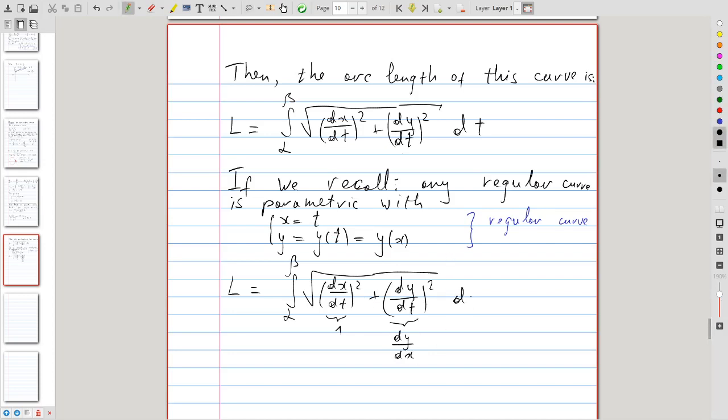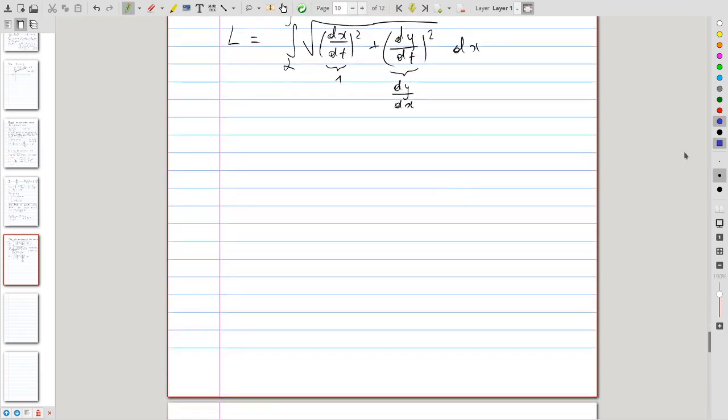And so, the arc length formula for a parametric curve is more general in the sense that it implies the formula for a regular curve. So, this is the formula that we will routinely use when we need to compute the arc length of a parametric curve. And, to illustrate this, let us look at an example.